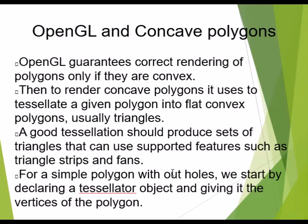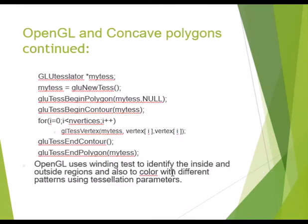For a simple polygon without holes, we start by declaring the tessellator object and giving it the vertices of the polygon. First you need to create an object of the tessellator — the GLU library has a tessellator class. Create an object and then call gluNewTess, which is a short form for the tessellator, to create a new tessellator with this constructor. Then you call the function to delimit the polygon description, which takes first a tessellator object and then the data related to the polygon — here we pass null as we will take up the details later in the for loop.